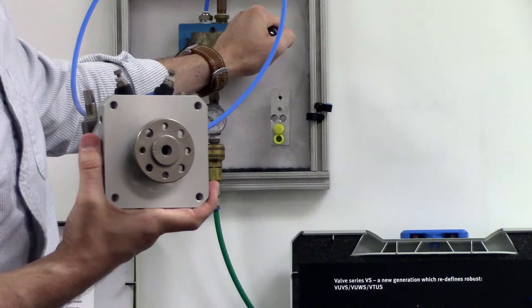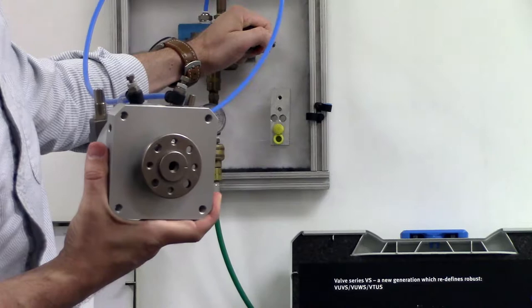Notice how the vane rotates one way when the air is supplied to one port and the opposite way when air is supplied to the other port.